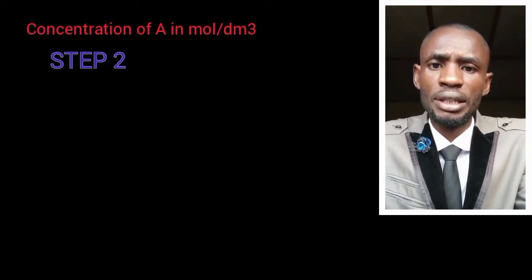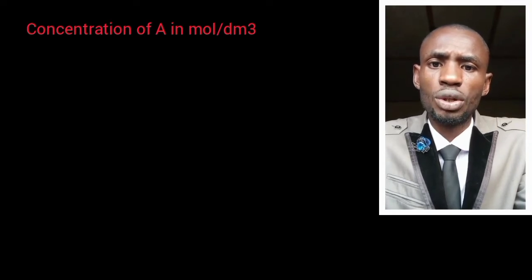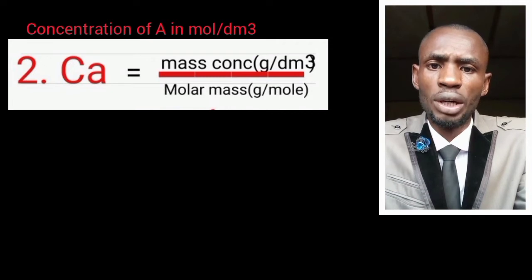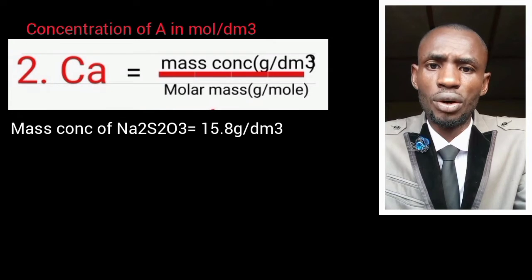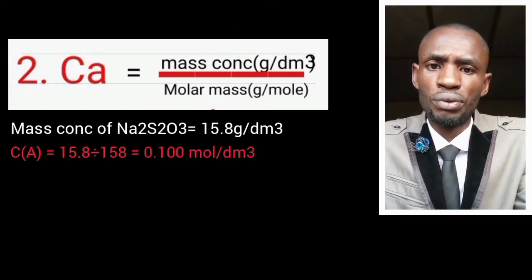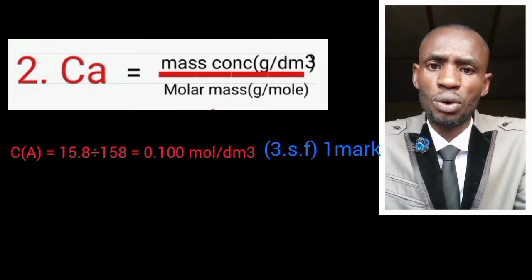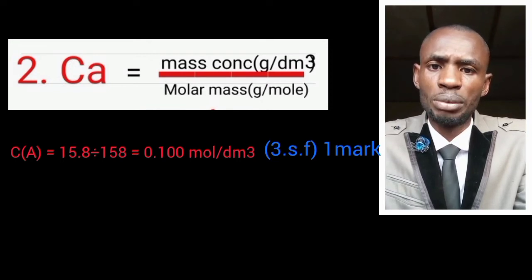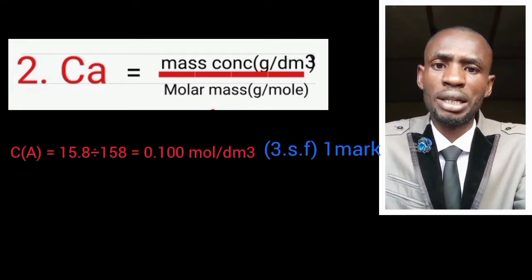In this case, we already know our mass concentration and we can also get our molar mass. So we use: molarity of A = mass concentration of A ÷ molar mass of A. By the time you substitute the values correctly, you earn one mark, and the correct answer earns another mark. Note that when calculating concentration in mol per dm³, your final answer must be expressed in three significant figures to earn that mark.